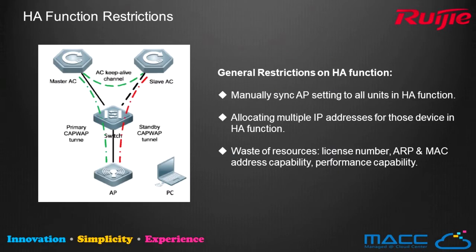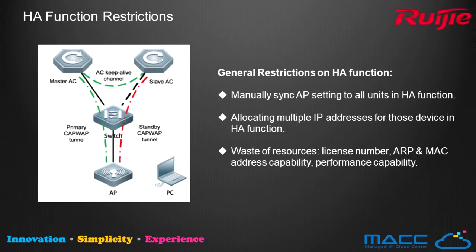Let's take a look at the Wireless HA high availability model. In this illustration, the AP establishes two CAPWAP tunnels with the master and slave AC at the same time, which increases maintenance cost. There are three major disadvantages of HA: first, all configurations need to be the same on each controller member and require manually entering the same settings on each. Second, multiple IP addresses are required, increasing maintenance cost. Third, hardware and software resources are duplicated, including licensed AP and MAC address capacity and data forwarding performance.